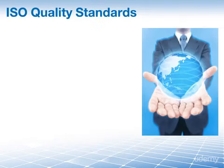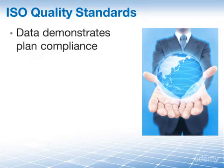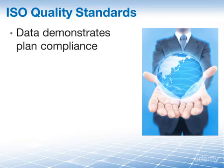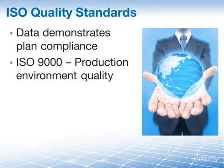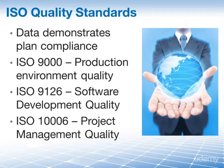The quality standards described in the PMBOK Guide for project quality management are intended to be compatible with ISO quality standards — the International Organization for Standardization. Every project should have a quality management plan containing data demonstrating compliance. ISO's purpose is to ensure that companies document what they do and that they do what they document. Relevant ISO standards include ISO 9000 for quality in production environments, ISO 9126 for software development quality, and ISO 10006 for quality in project management.